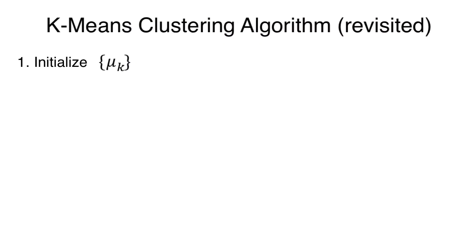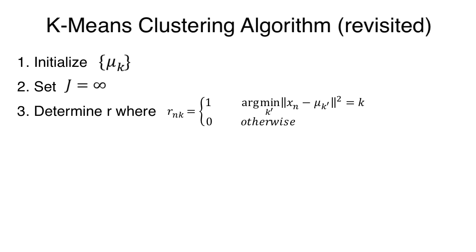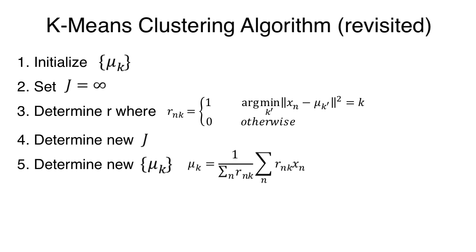Now, let's revisit the k-means algorithm, but we'll map it up a bit. Step 1: we'll initialize some values for the cluster centers mu k. This is typically k discrete data points. Step 2: we'll set the initial distortion to infinity. Step 3: determine the cluster membership rnk for all samples. Step 4: determine the new distortion j. Step 5: recompute the cluster centers mu k with the centroid update rule.